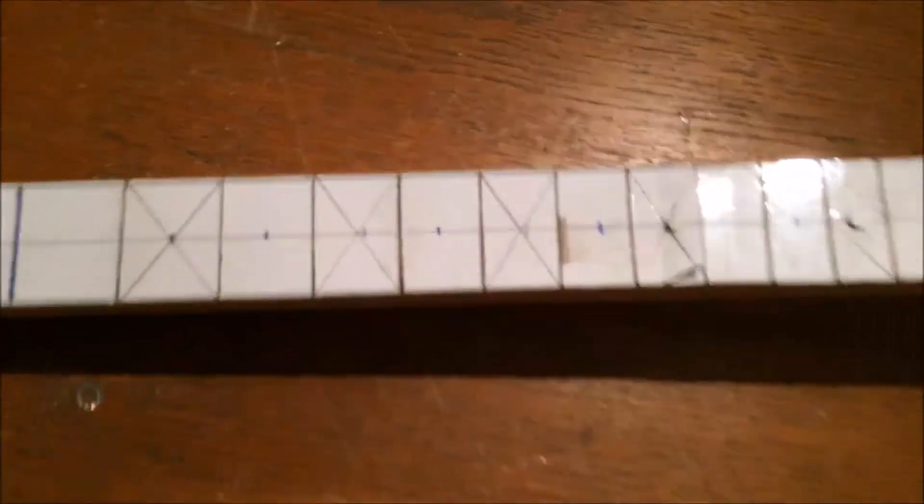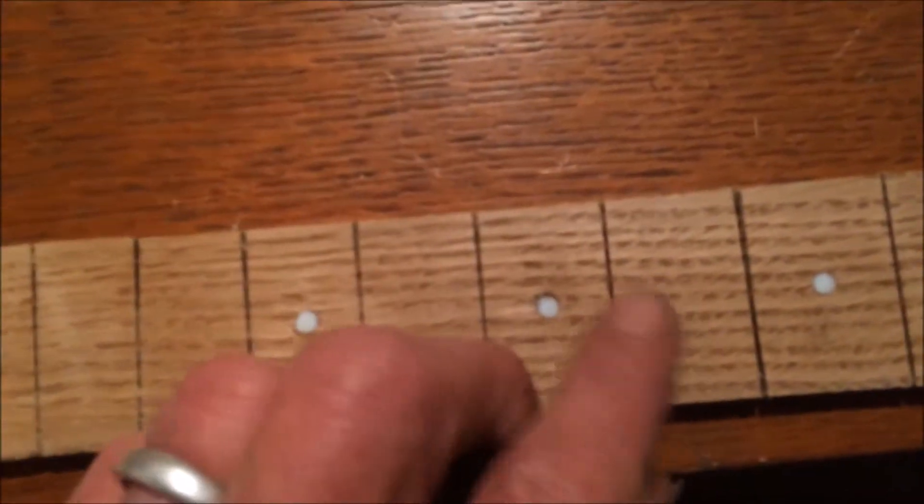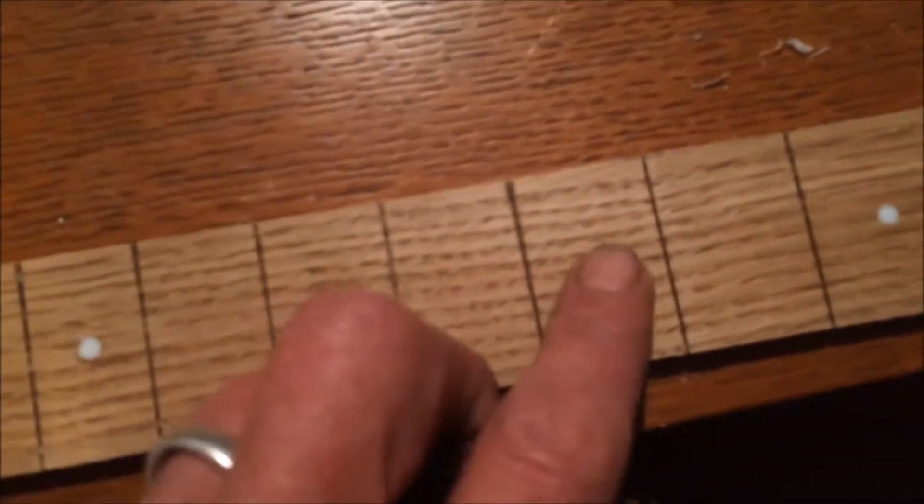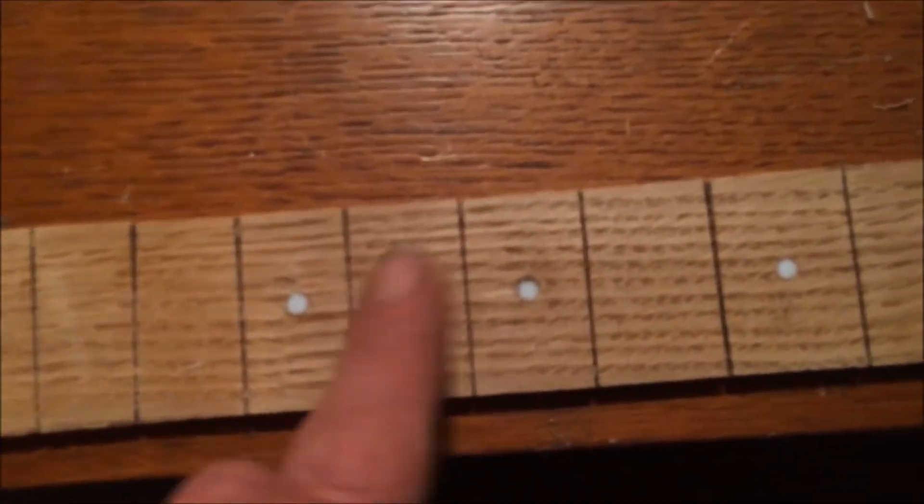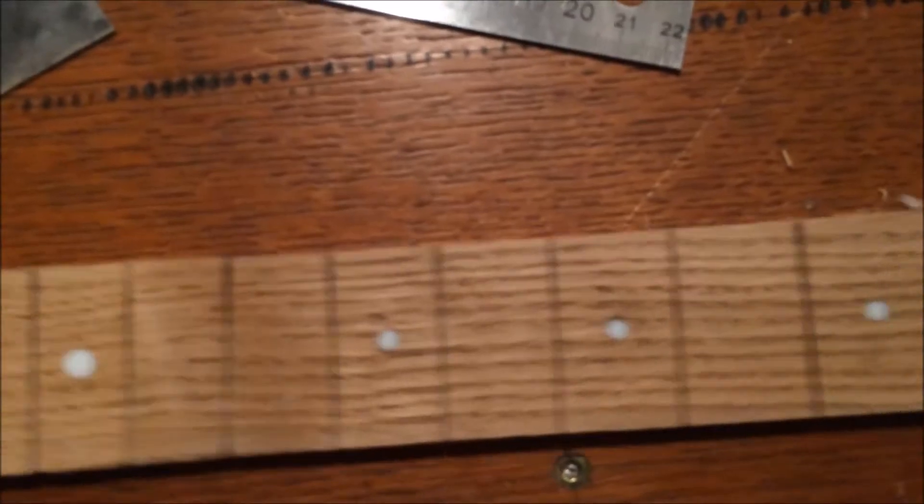So, fret markers fitted. I'll still leave them just a little bit—there's a little bit of proudness there—because when I stain it, I might just give it a quick scrape over again just to take any stain off it. I'm staining this incidentally with vinegar, so it might not hold on to the plastic I've inserted, but you never know.